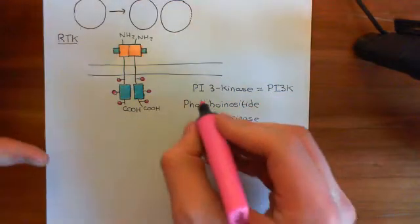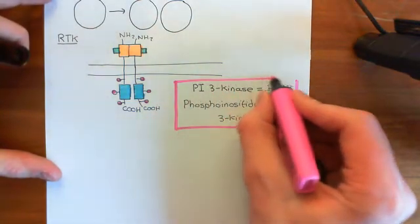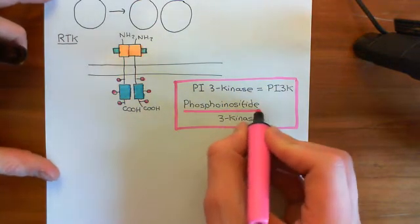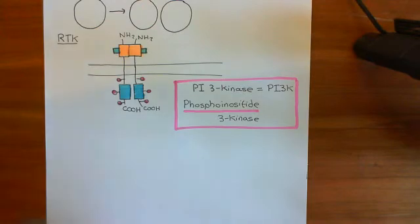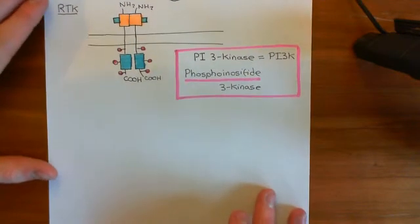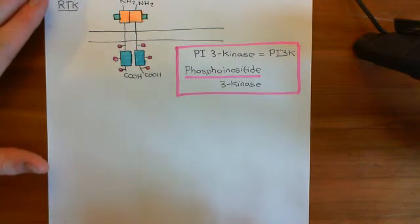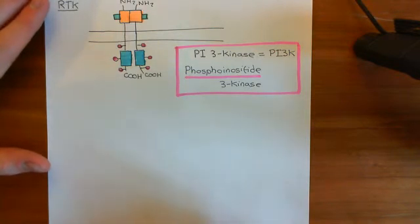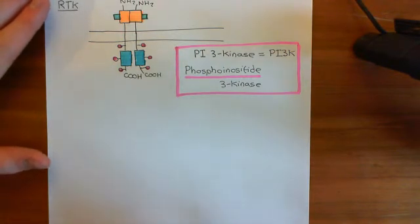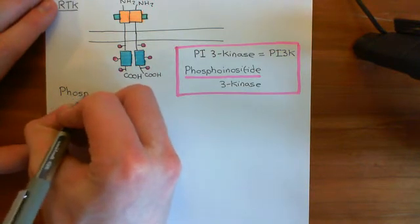All of these names refer to a family of enzymes which are going to phosphorylate phosphoinositides. I want to start off by discussing what phosphoinositides are, and then we'll come back to discussing the phosphoinositide-3 kinase family of enzymes. In order to discuss phosphoinositides, I need to discuss what phosphatidylinositol is, and in order to do that, I need to discuss what a phosphoglycerolipid is, and in order to do that, I need to discuss what a phospholipid is.